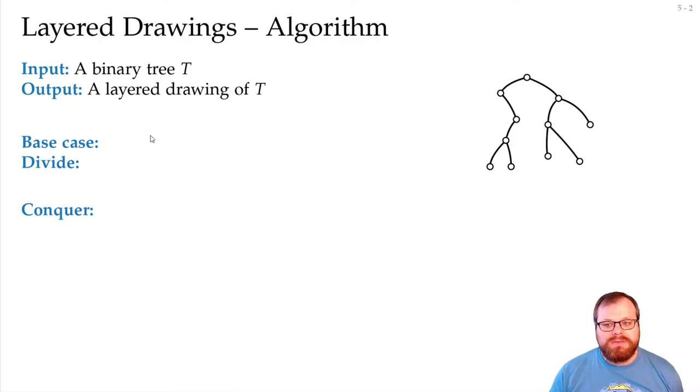The base case is very simple. For our tree, it is just a single vertex. Basically, it's just a leaf. And to draw it, well, we just place it somewhere and we're done.